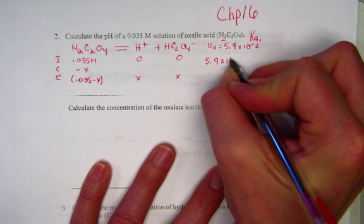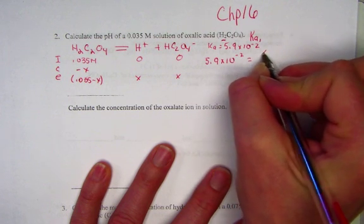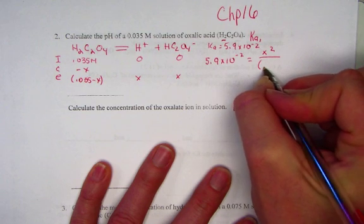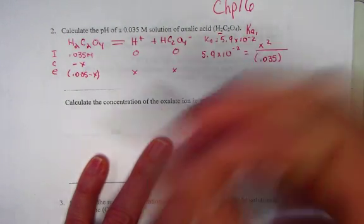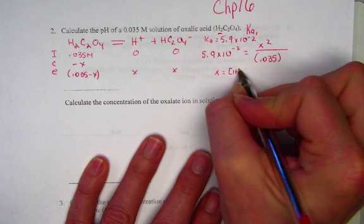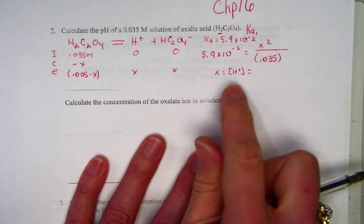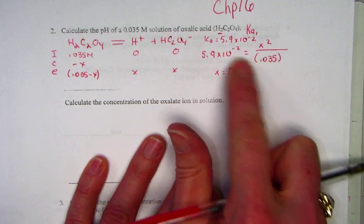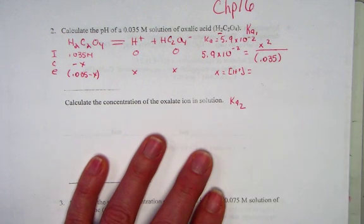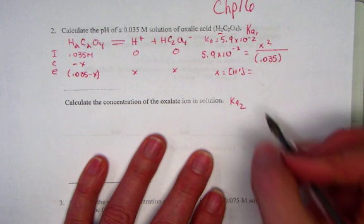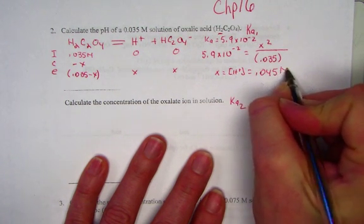Setting up our equation where Ka, 5.9 times 10 to the negative 2, is equal to X squared set over 0.035. I'm going to leave that and check the 5% rule. When we solve for X, X will represent the concentration of the hydrogen ion at equilibrium which we can then use to calculate pH. Let's hit solving for X first without the quadratic equation and from there we'll check our 5% rule.